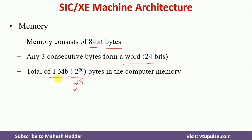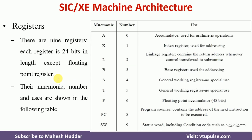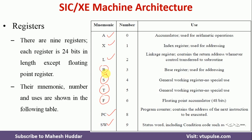Coming back to the registers: in SIC, we have only 5 registers — A, X, L, PC, and SW. But in SIC-XE, we have 4 more registers: B, S, T, and F. I have already explained registers A, X, L, PC, and SW. If you watch the SIC machine architecture video, you will get an idea about all those registers.